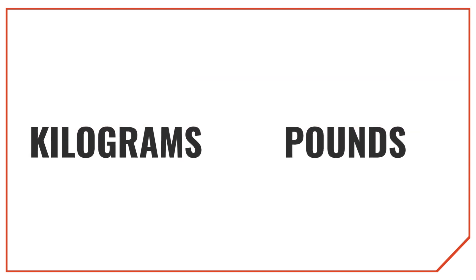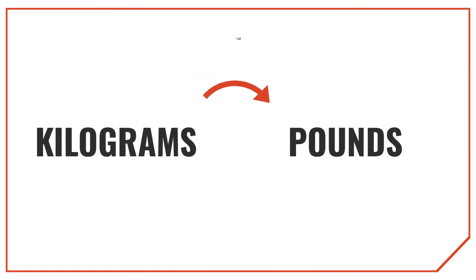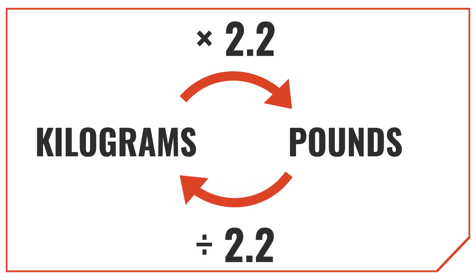To convert kilograms into pounds, you just multiply the measurement in kilograms by 2.2, since there are 2.2 pounds per kilogram. To convert pounds back to kilograms, you do the opposite and divide the measurement by 2.2. So to go from kilograms to pounds, you'd multiply, and to go from pounds to kilograms, you divide.